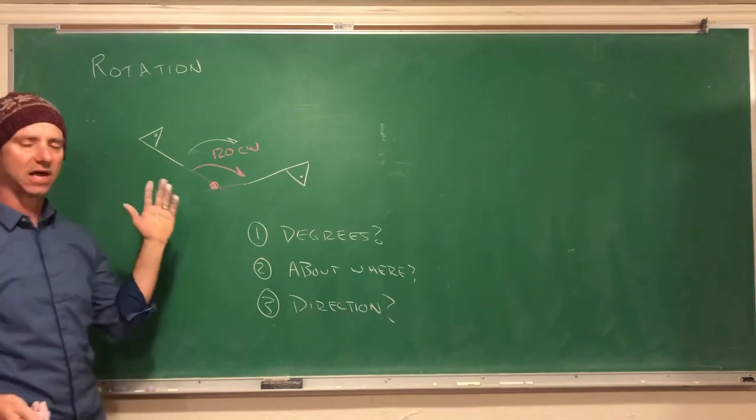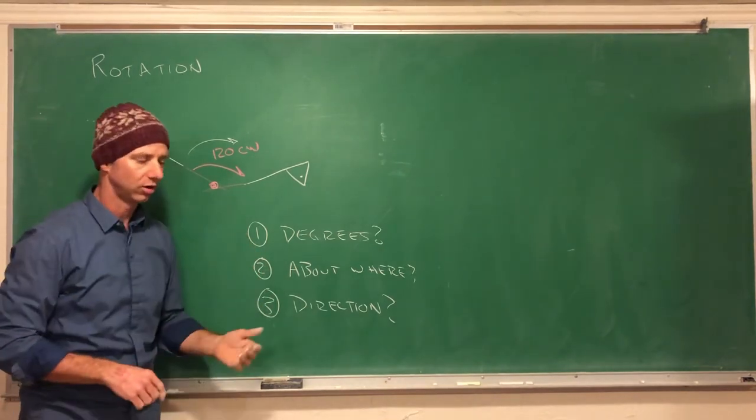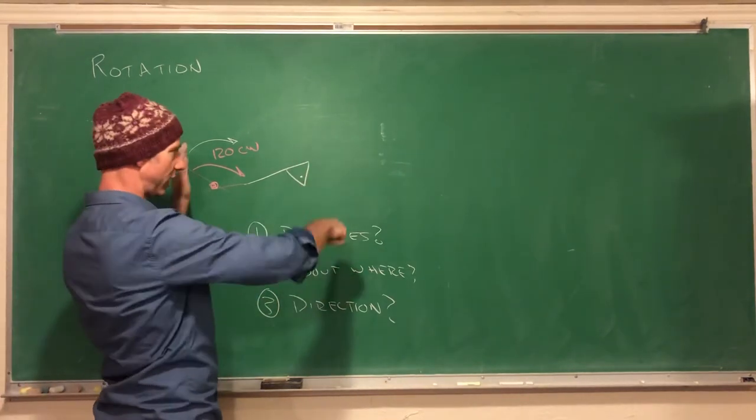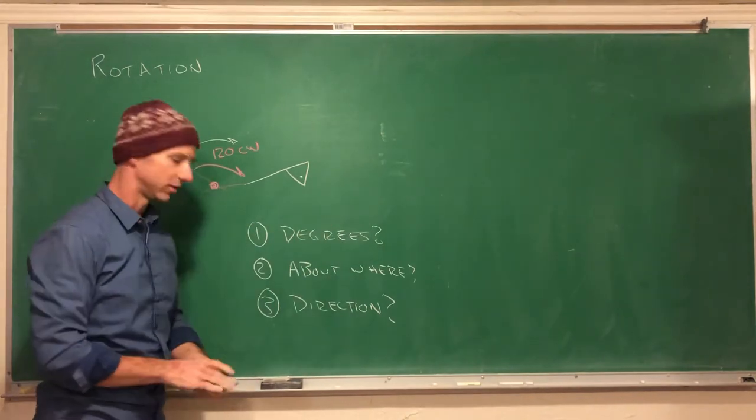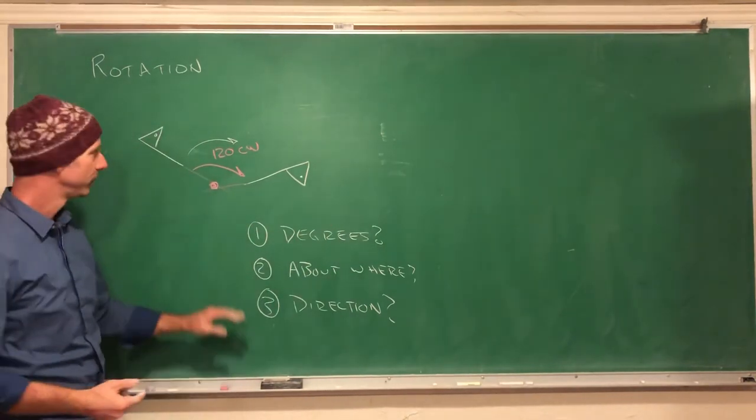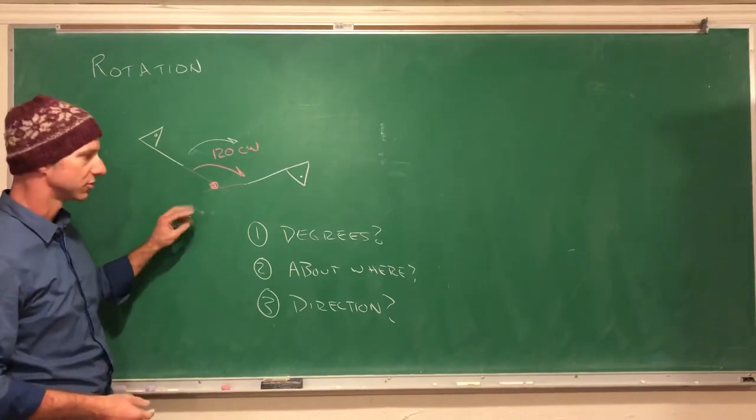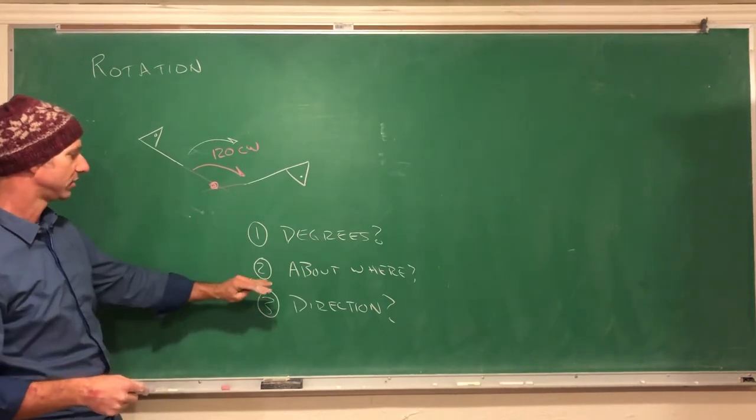Typically we have a point like the origin or an ordered pair on a set of coordinates, but these three pieces are critical when talking about rotations because it's going to be different if I rotate about somewhere else.